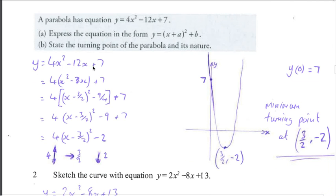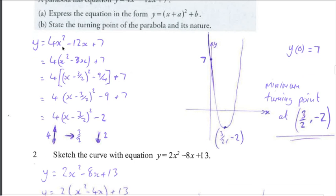So we have y equals 4x squared minus 12x plus 7. Let's complete the square. Let's take out a common factor of 4 from the x squared and the x terms, which we always do. Then we're going to complete the square for x squared minus 3x.